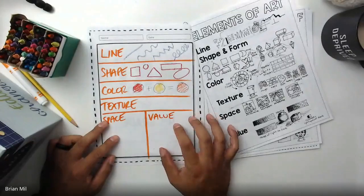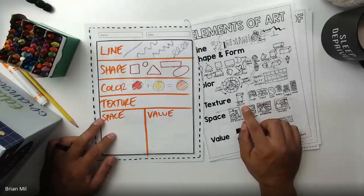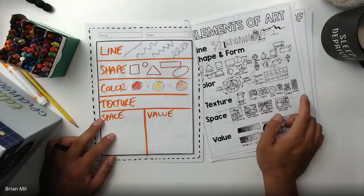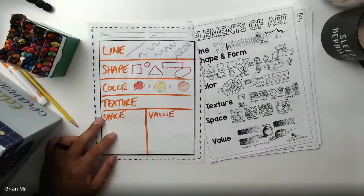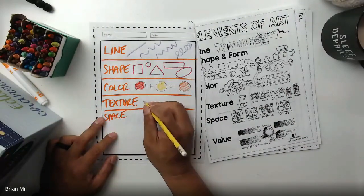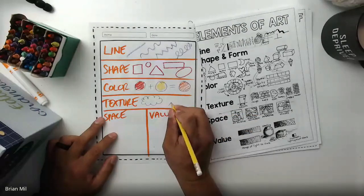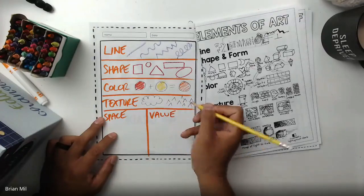Okay. Fourth one, texture. Texture, it's hard to draw. But if you look at the examples over here, they have examples for smooth, rough, hard, soft, bumpy, jagged, or woven. If you want to copy any of those, you can to here. For me, I'm just going to draw in pencil. So for soft, maybe I'll just draw a fluffy cloud. For jagged, I'll just draw triangles like this. Super simple.